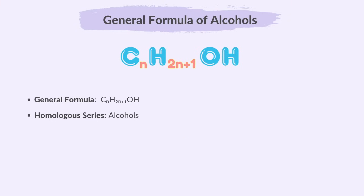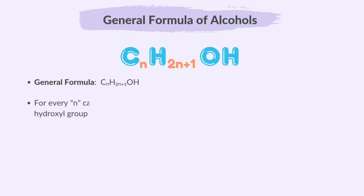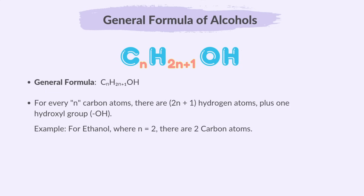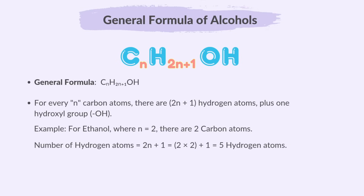The general formula of alcohols is CnH2n+1OH. Alcohols contain an OH group called the hydroxyl group. For every n carbon atoms, there are 2n+1 hydrogen atoms plus 1 hydroxyl group. For example, for ethanol where n=2, there are 2 carbon atoms. The number of hydrogen atoms is 2(2)+1 = 5, so ethanol is C2H5OH.